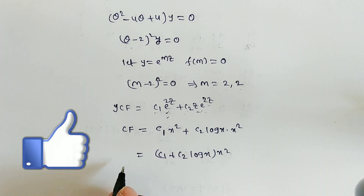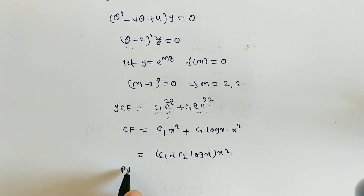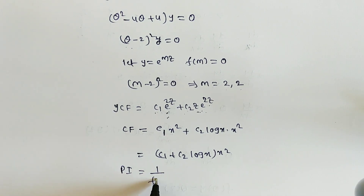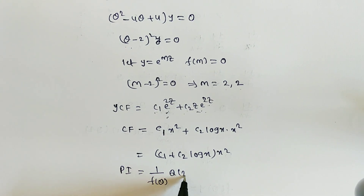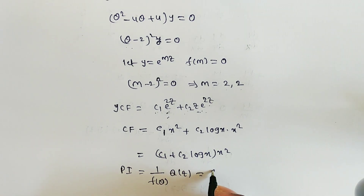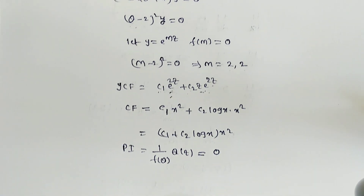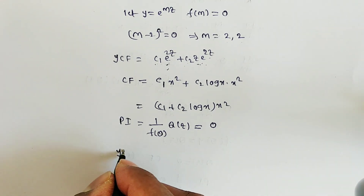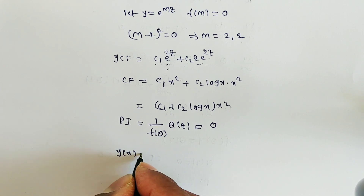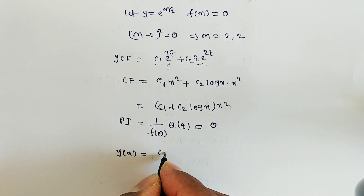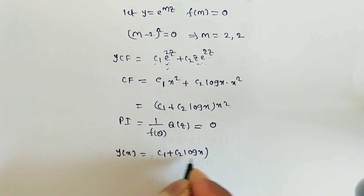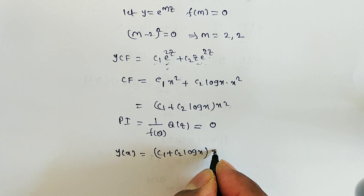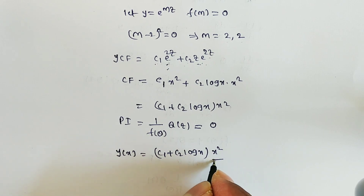The particular integral is (1/f(θ)) · Q(z), but here Q(z) = 0. So the particular integral is 0. Hence, the complete solution is y(x) = (c₁ + c₂ log x) · x².